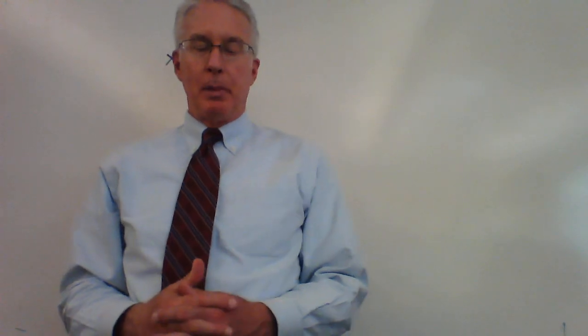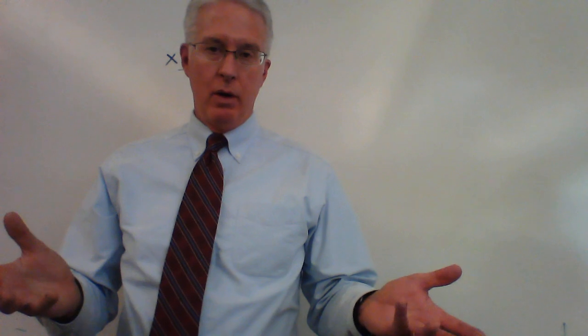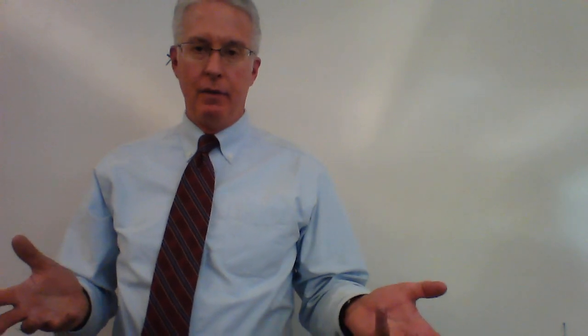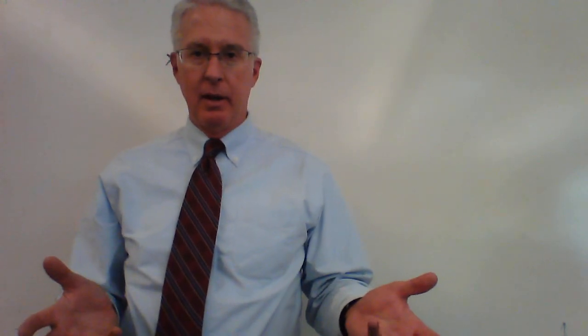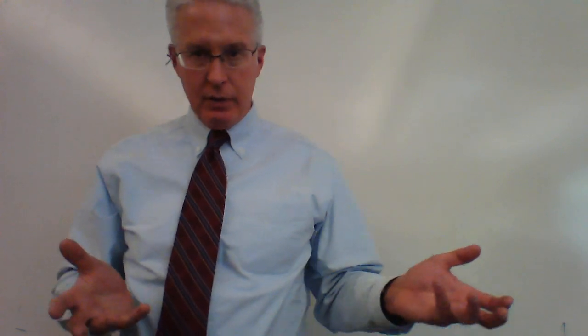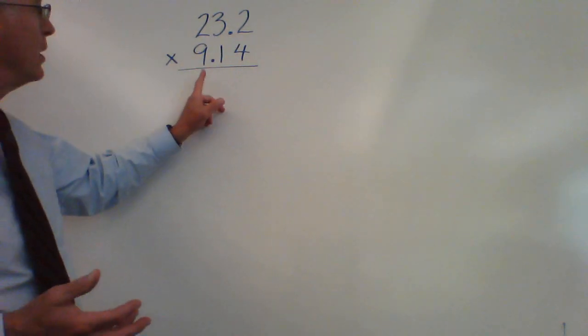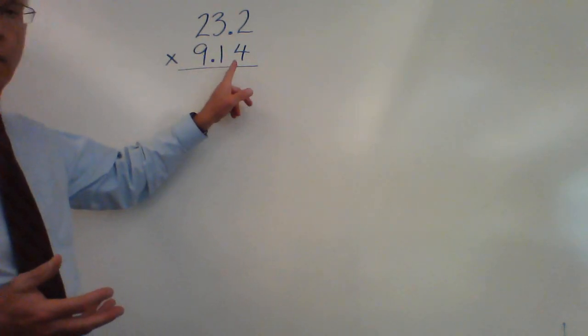All right, our final multiplication by hand video is to answer the question, what happens if one or both of the numbers we're multiplying have a decimal point in them? So if you look to see what I've got here, I've got 23.2 times 9.14.